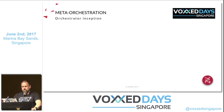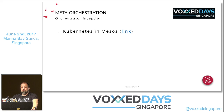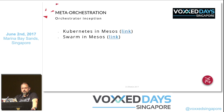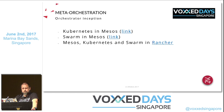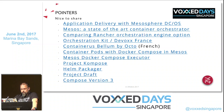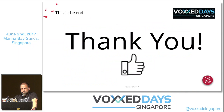One last note on meta-orchestration: you can install Kubernetes inside a Mesos cluster, or Swarm inside a Mesos cluster — so you can use DC/OS to run big-data workloads and use Swarm or Kubernetes for containers within the same cluster. And as I mentioned, you can install Mesos, Kubernetes, and Swarm all inside a Rancher cluster. The slides include pointers to everything discussed in this talk — and that's it from me.